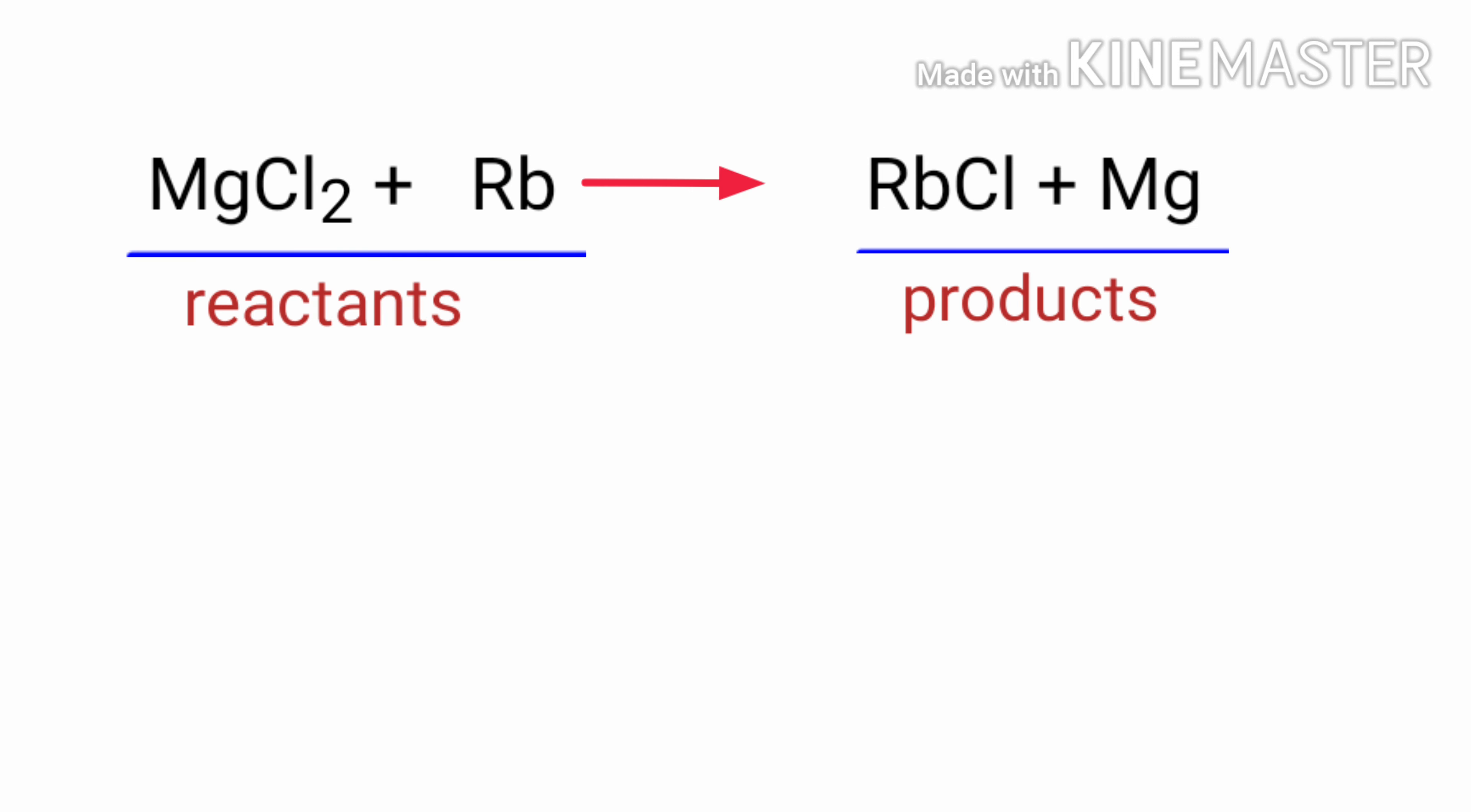In this equation, the reactants are Magnesium Chloride and Rubidium and the products are Rubidium Chloride and Magnesium.